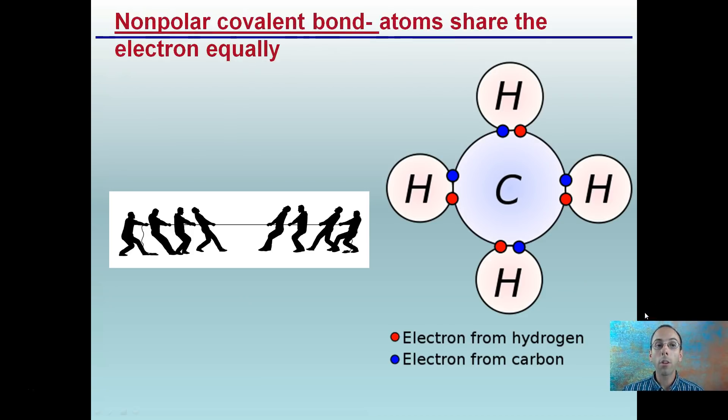We have certain things called non-polar covalent bonds. So covalent bonds is sharing, but non-polar means atoms share the electron equally. We see that here. Think of tug-of-war and everyone's pulling equally. No real favoritism here. Everything is being shared equally. That would be a non-polar covalent bond.